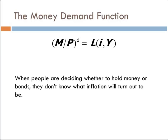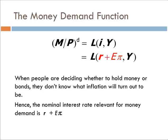So we want to take this just a step further. When people are deciding whether to hold money and bonds, they don't know what the inflation rate turns out to be. And so we're going to plug in this formula, this Fisher equation for the ex-ante real interest rate. Now notice that this comes straight from the Fisher equation because the Fisher equation gives us that the real interest rate equals the nominal interest rate minus expected inflation. We solve that for the nominal interest rate and we get this relationship here. The nominal interest rate equals the real interest rate plus expected inflation.